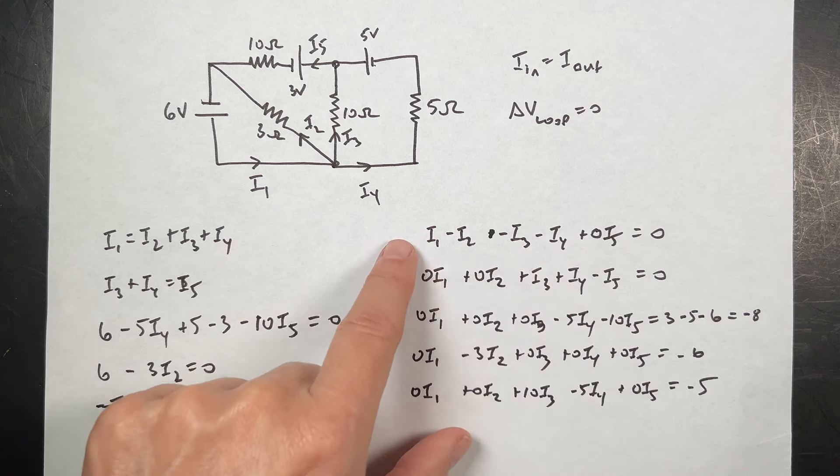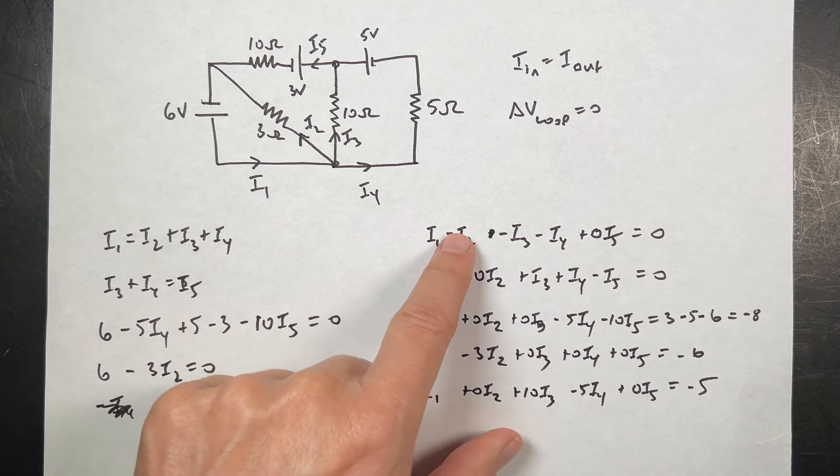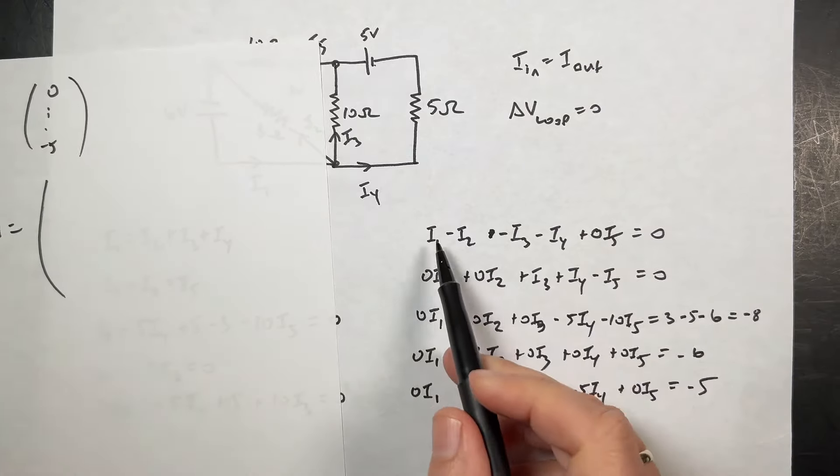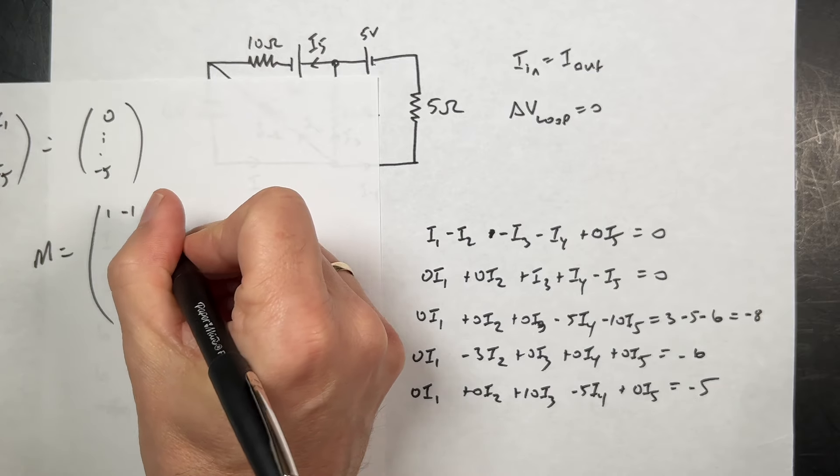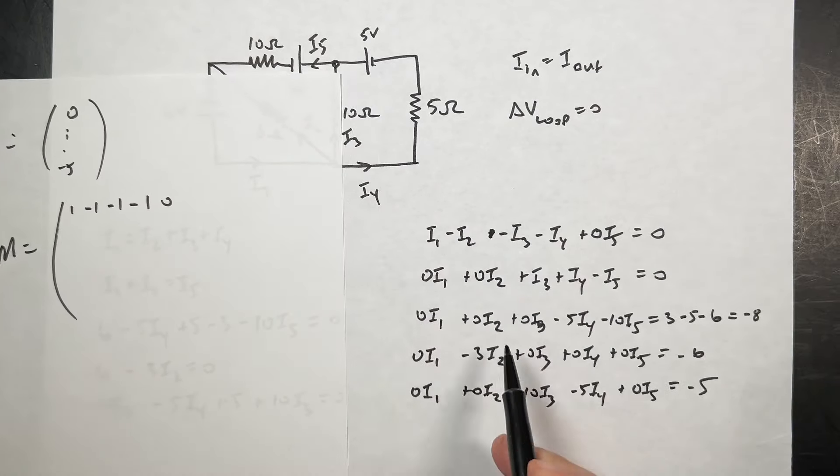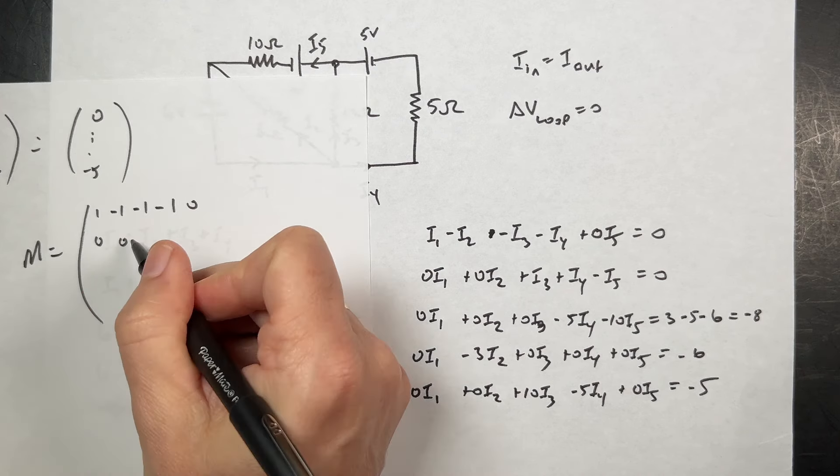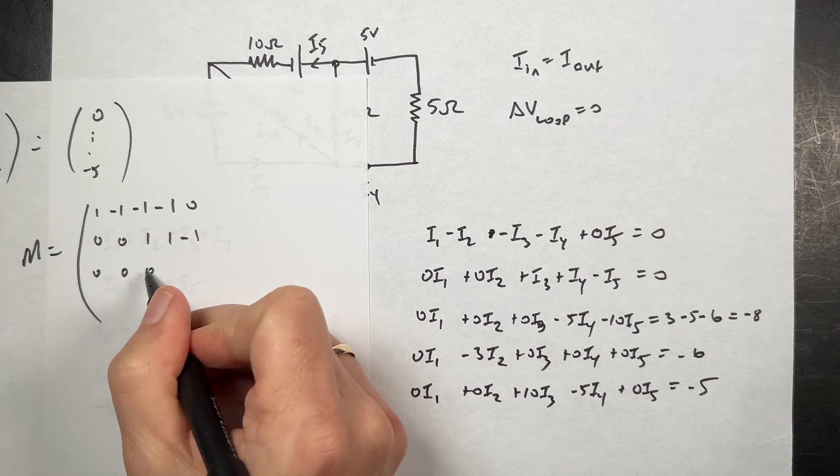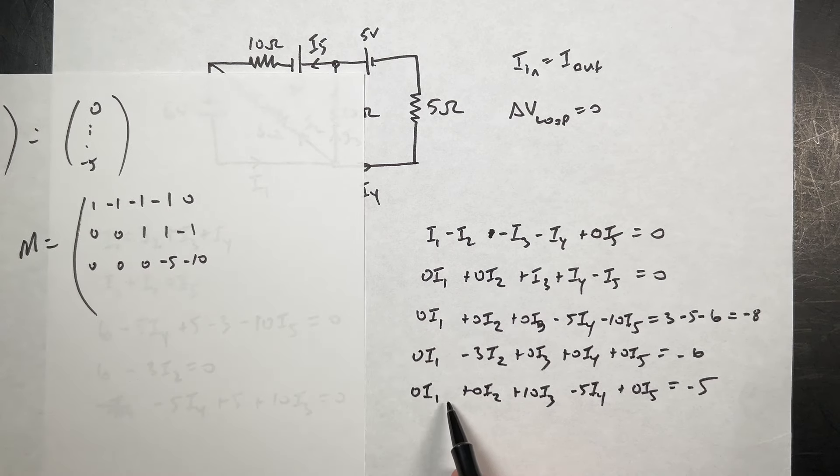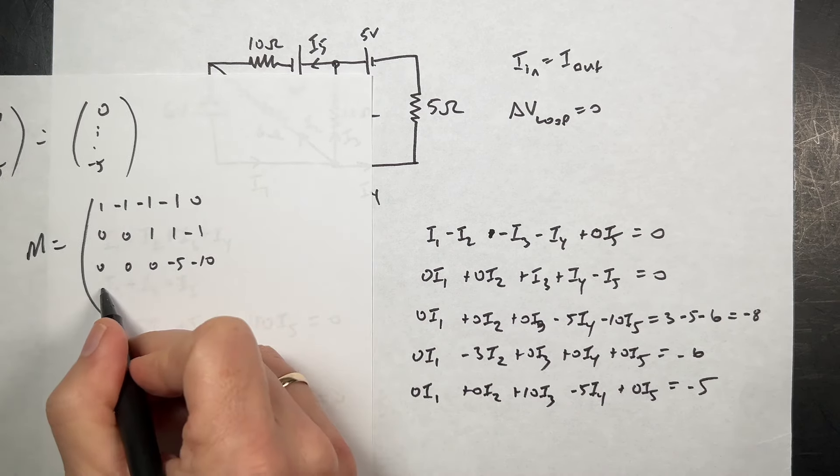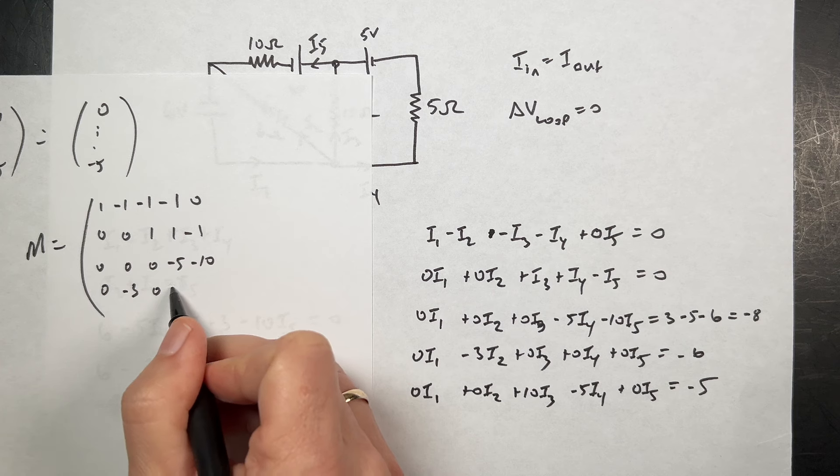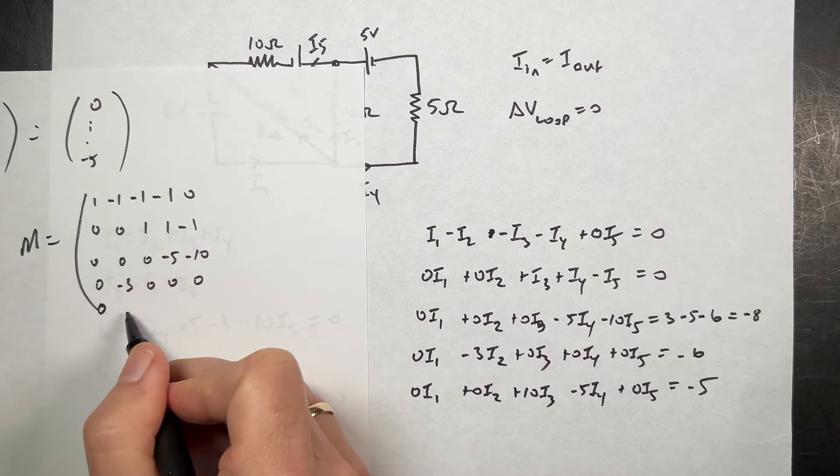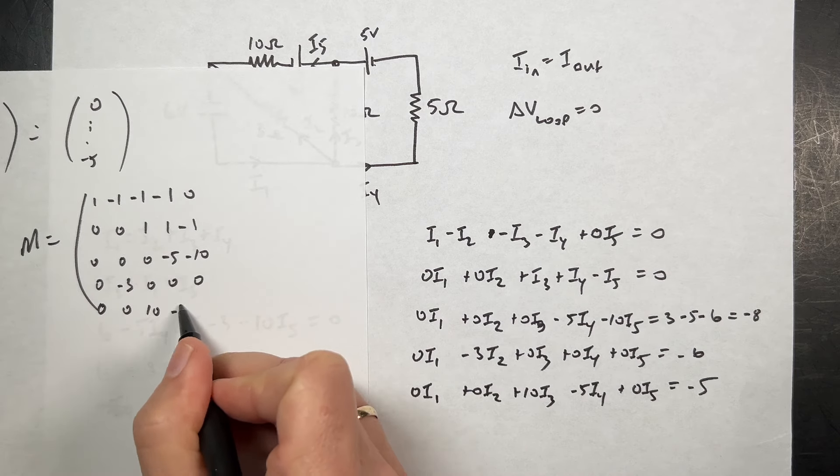Now I just need to find this matrix M. And you can see that if I have these in that format, it's just the coefficients in front of all the I's. So let's write the matrix M. It's going to be one, negative one, negative one, negative one, zero. The next one's going to be zero, zero, one, one, negative one. Zero, zero, zero, negative five, negative ten. And then zero, negative three, zero, zero, zero. And then finally, zero, zero, ten, negative five, zero.